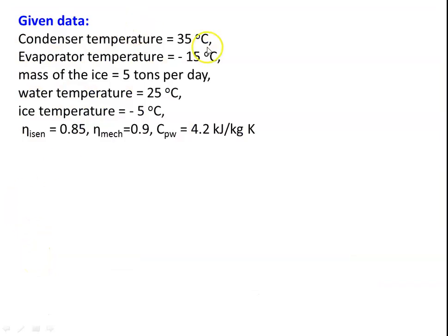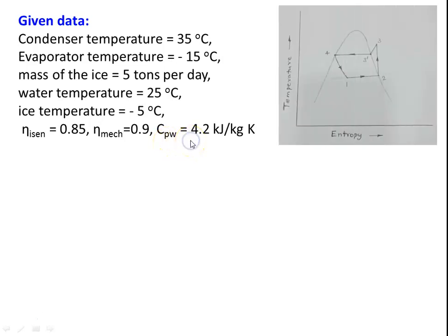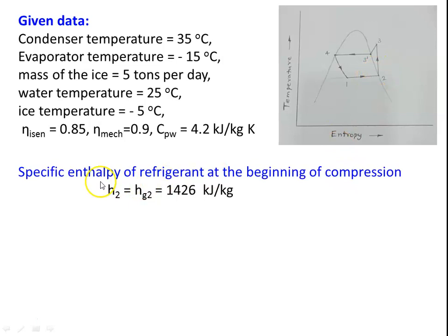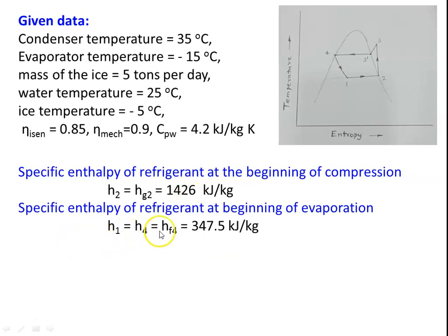Given data: condenser temperature 35°C, evaporator temperature minus 50°C, mass of ice 5 tons per day, water temperature 25°C, ice temperature minus 5°C, isentropic efficiency 0.85, mechanical efficiency 0.9. The temperature-entropy diagram shows: entry of compressor is saturated vapor, end of condenser is saturated liquid, end of compression is superheated vapor. Specific enthalpy at beginning of compression H2 equals HG2 equals 1426 kJ/kg. Specific enthalpy at beginning of evaporation H1 equals H4 equals 374.5 kJ/kg from the table.